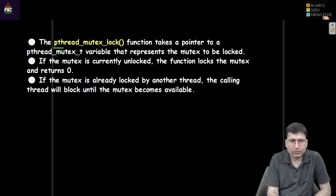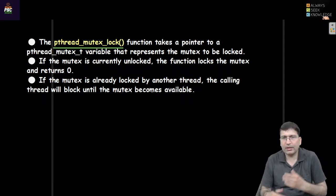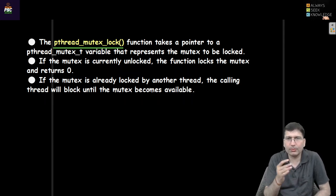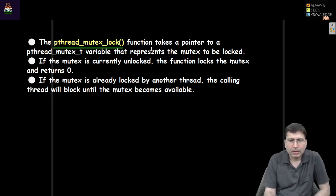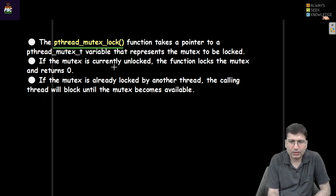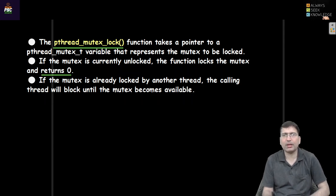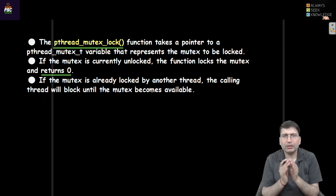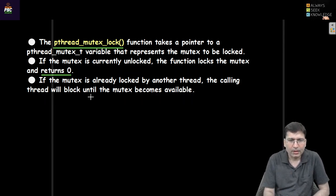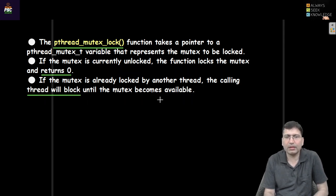There is another function: pthread_mutex_lock. After initializing a mutex using pthread_mutex_init, we can call pthread_mutex_lock. The function takes a pointer to the pthread_mutex_t type variable. If the mutex is currently unlocked, the function locks the mutex and returns zero. If the mutex is already locked by another thread, the calling thread will be blocked until the mutex becomes available.